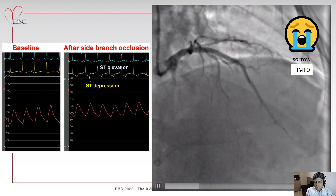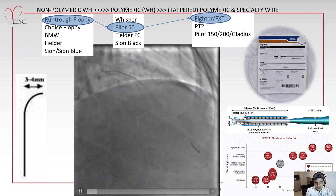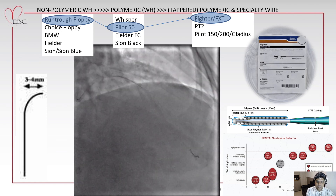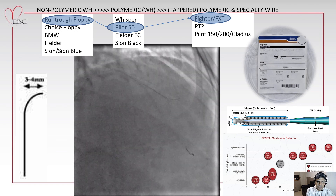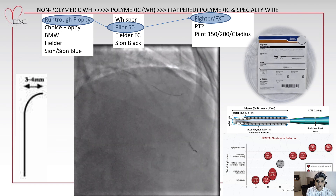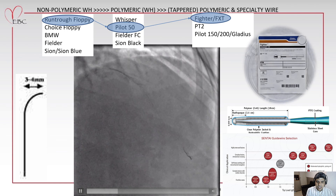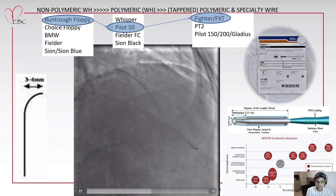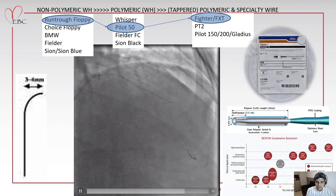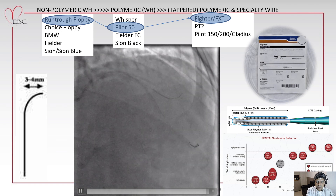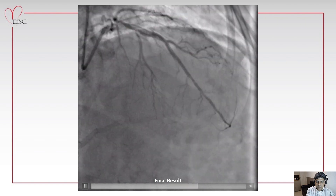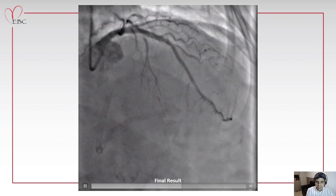The patient had ST elevation, chest pain, and tachycardia. This is our approach for this kind of side branch acute occlusion: we start with non-polymeric workhorse wires, then change to polymeric workhorse, then polymeric tapered wires, and some specialty wires. We start with a regular 3 to 4 mm curve. This case was resolved using the Boston Fighter wire, which was very gently manipulated to seek the channel through the strut, followed by balloon dilation to restore flow. This is the final result with flow restoration on the diagonal branch.